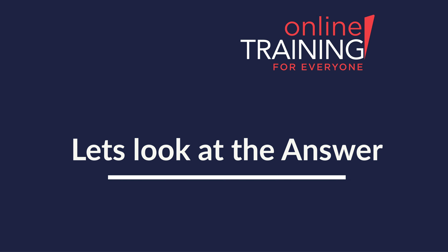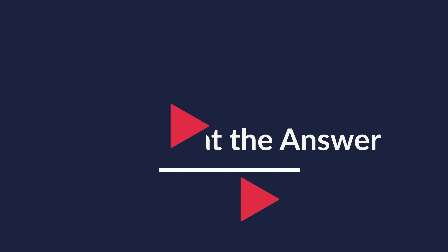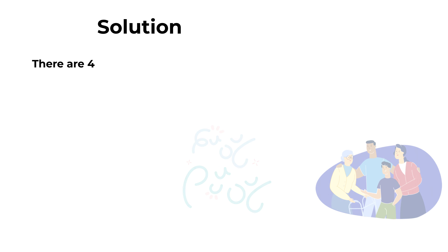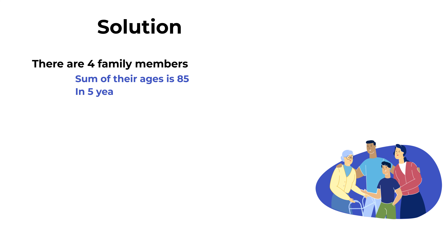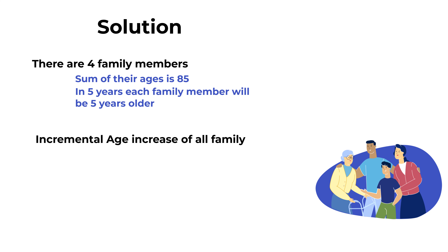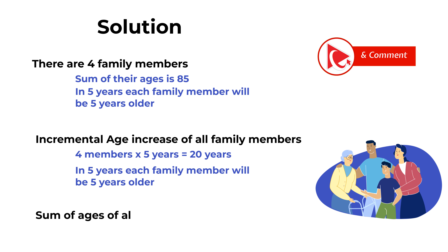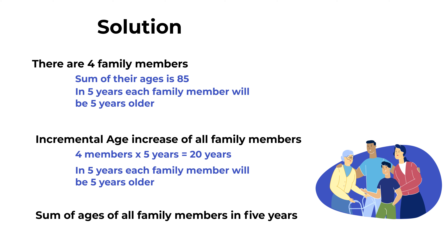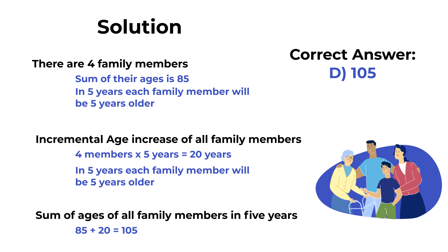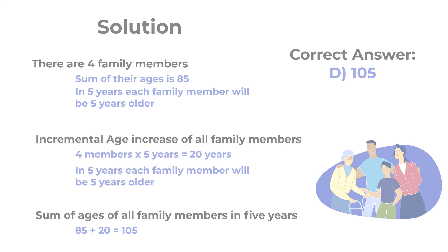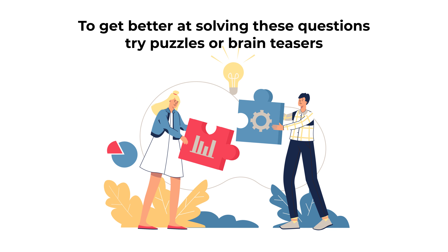What's interesting about this problem is that it is simpler than you think — the key is not to overthink it. There are 4 family members, and the sum of their ages is 85. In 5 years, each family member will be 5 years older. So the incremental age increase for all family members is 4 multiplied by 5, equals 20 years. The sum of all ages in 5 years is 85 plus 20, which equals 105. So the correct choice is Choice D, 105.